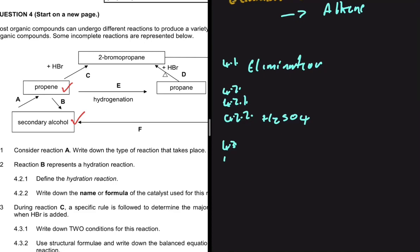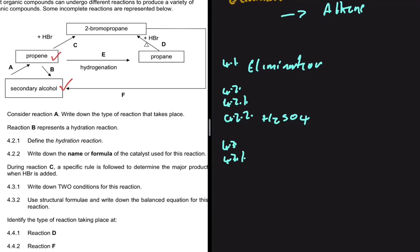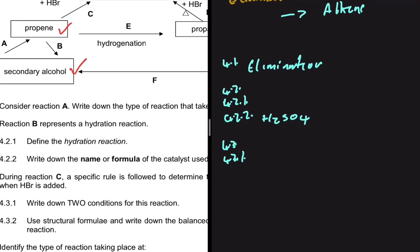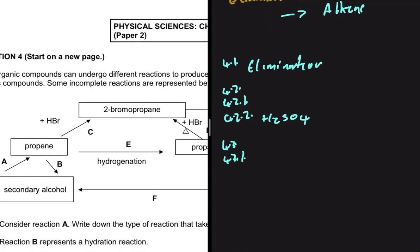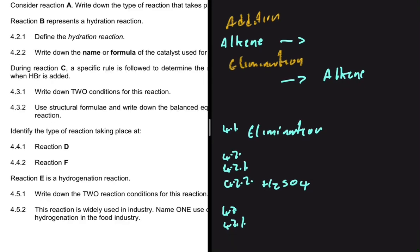For 4.3 and 4.3.1, during reaction C a specific rule is followed to determine the major product when HBr is added. For reaction C we start with propene and end up with 2-bromopropane. Do we start with an alkene? Yes — so reaction C is an addition reaction.